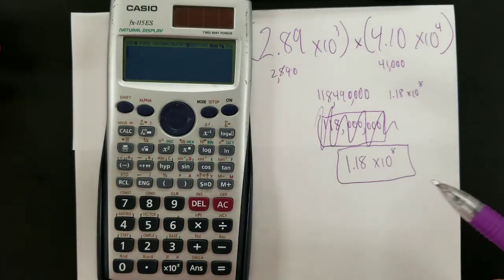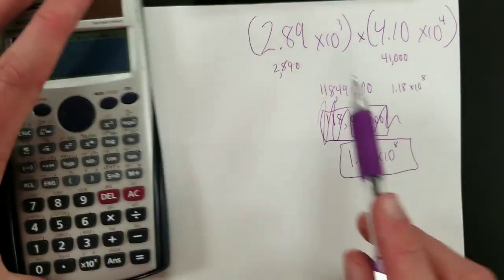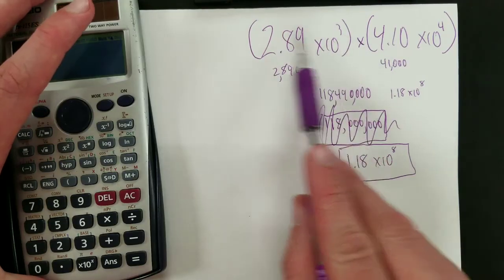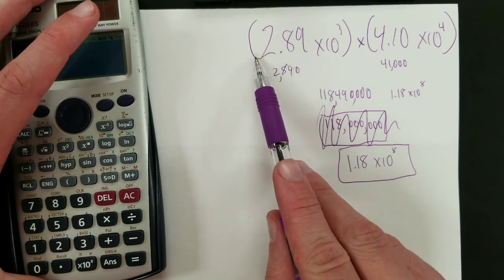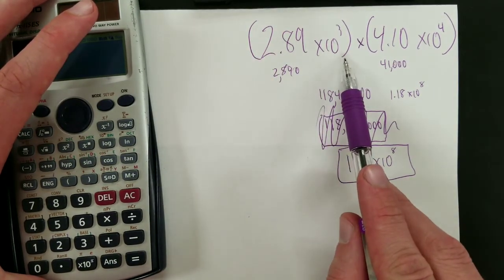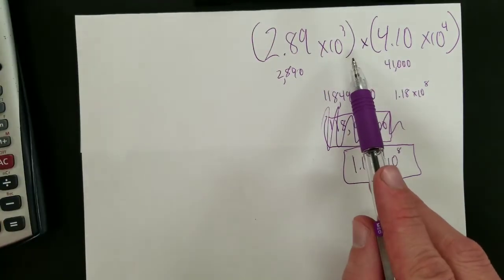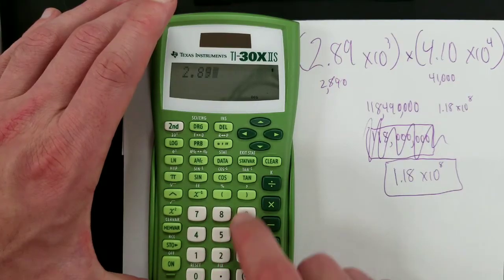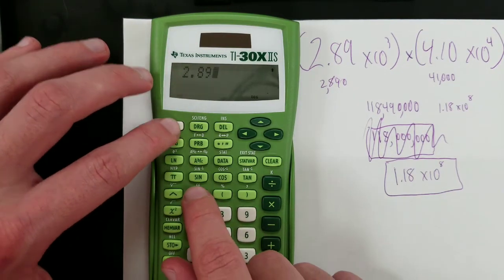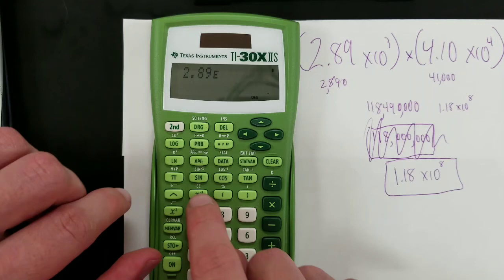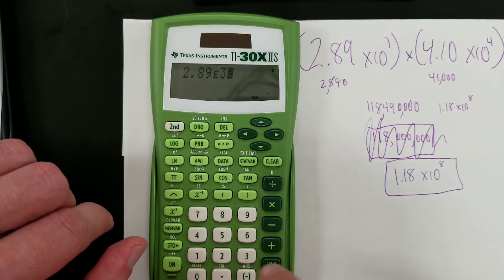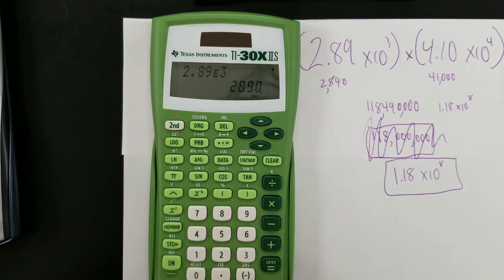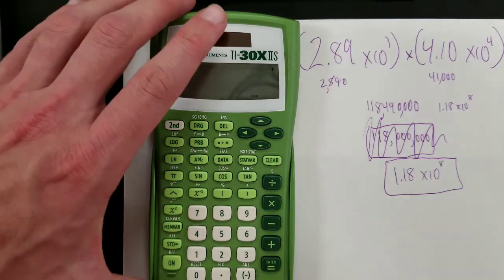Okay, so I know there's various other models of calculators out there, but it all goes the same way. Just make sure that whenever you do scientific notation calculations, make sure, above all else, that it is in parentheses to avoid errors from order of operations and make sure you only enter it in the way that I was showing you. 2.89, do not touch the multiplication button. Second function, EE, and then whatever power it is, in this case 3. Alright, there we go. Happy calculations and happy studies.